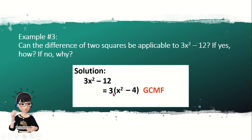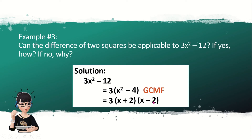Now take a look — we have x squared minus 4. This has two terms, 4 is a perfect square, the exponent is even, and the sign between the two terms is minus. So we can solve this by difference of two squares. Bring down the 3, then solve x squared minus 4 using difference of two squares. Divide the exponent by 2 to get x, and the square root of 4 is 2. So we have 3(x + 2)(x − 2). Meaning, we can apply difference of two squares to 3x squared minus 12, but we first need to get the GCMF.